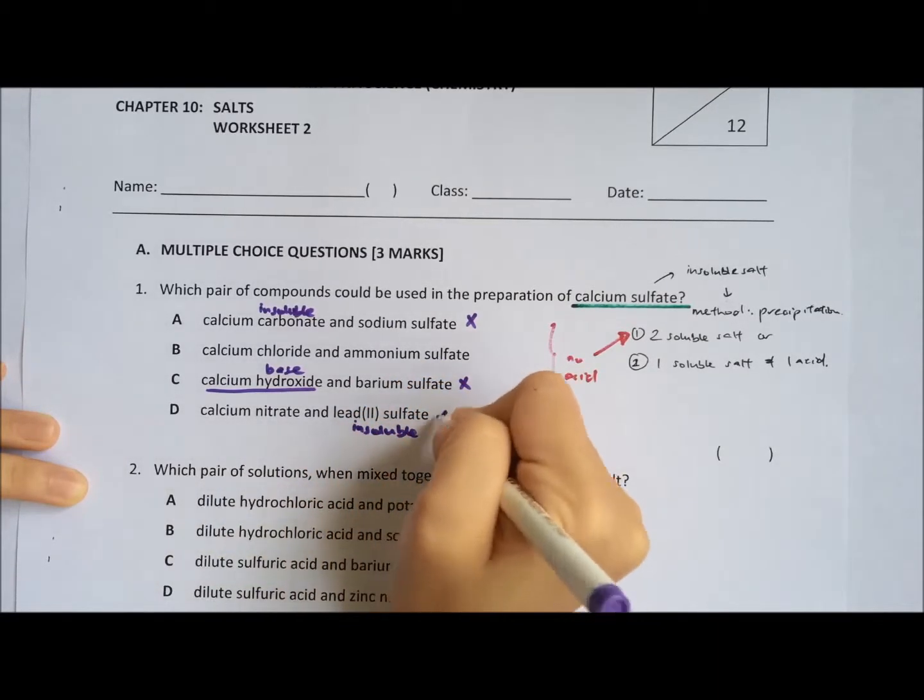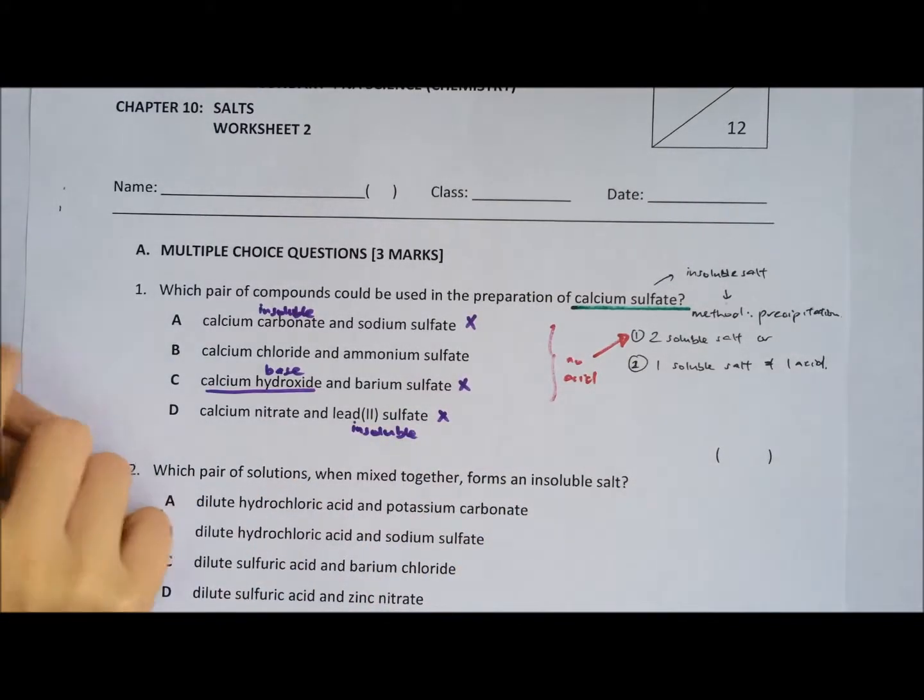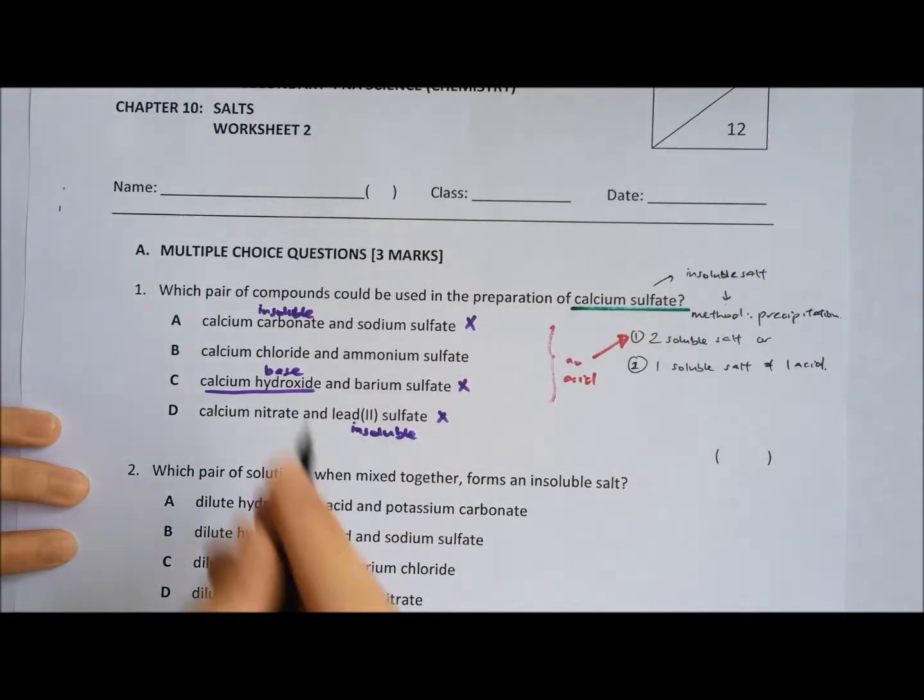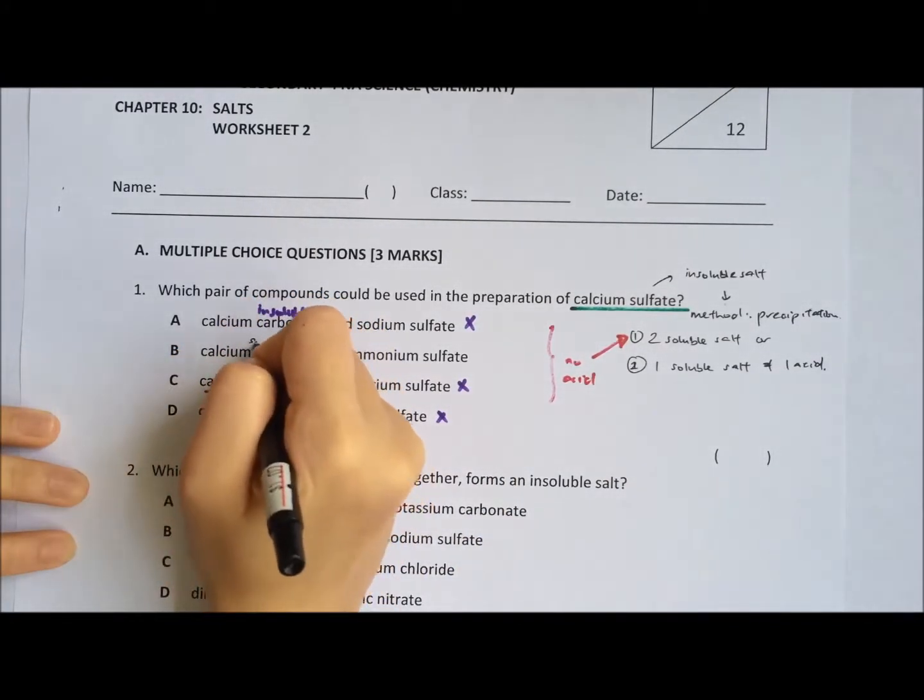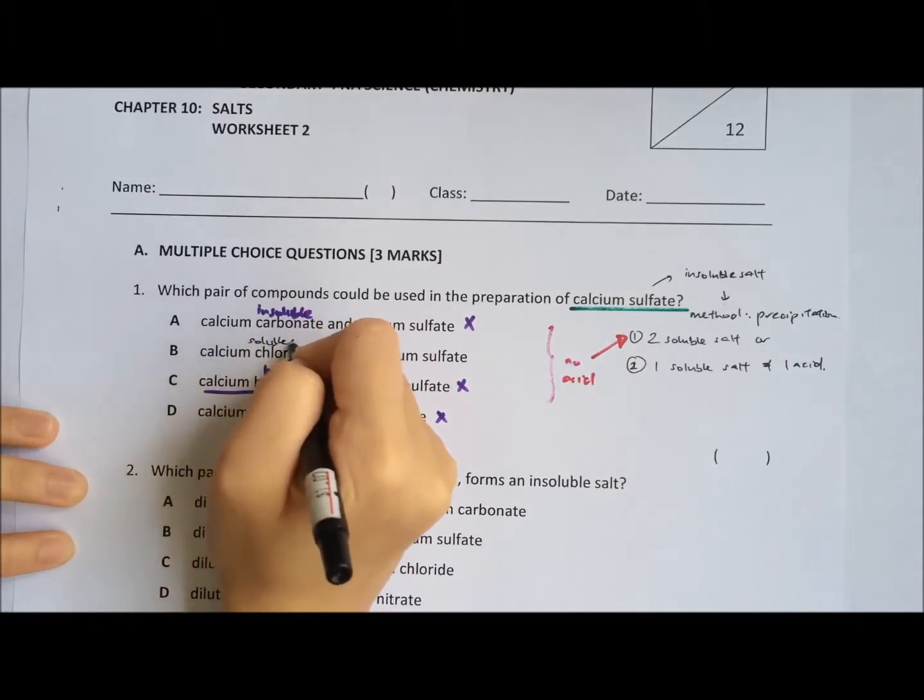Option D, lead(II) sulphate is insoluble as well, so option D is wrong. So let's look at option B and check.